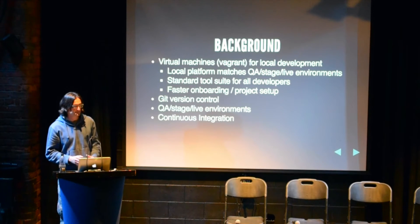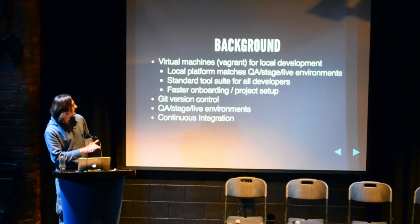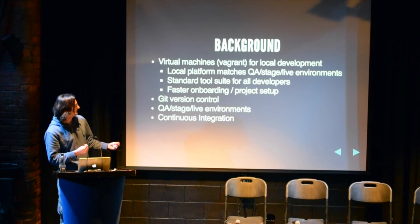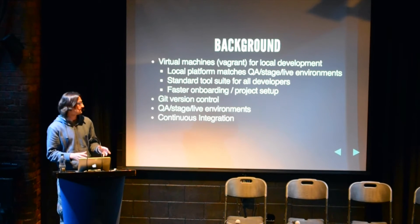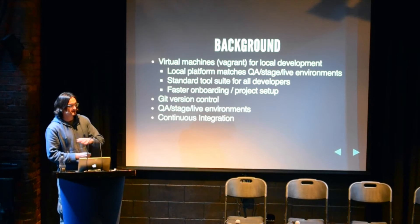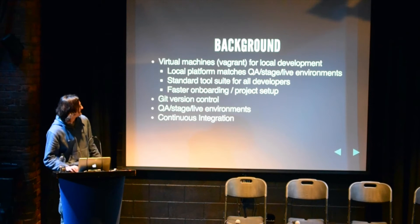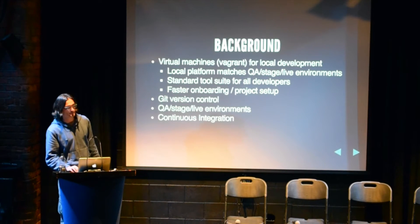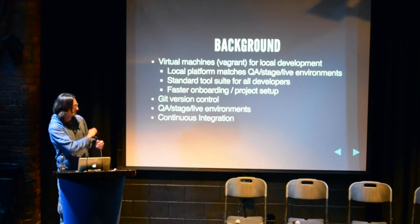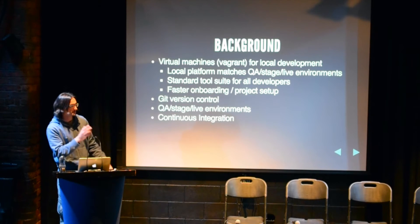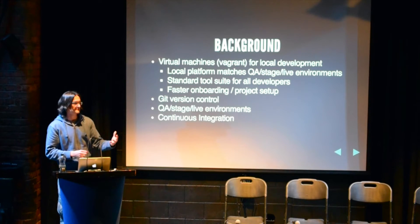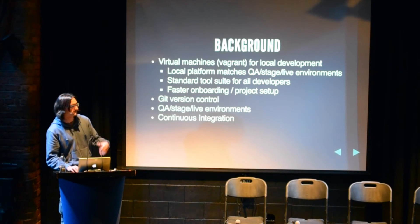This meant it took about a minute, but you were at a consistent point whenever someone checked code out — you knew there was nothing different in their configuration versus yours. Configuration changes that are part of the work should be committed and stored in version control. We use virtual machines locally for development, which is important because it allows us to have a standard tool suite on each developer's local VM so we can run scripts consistently. We use Git for version control and deploy to QA, stage, and live environments, with continuous integration to automatically build for those environments and run test suites.